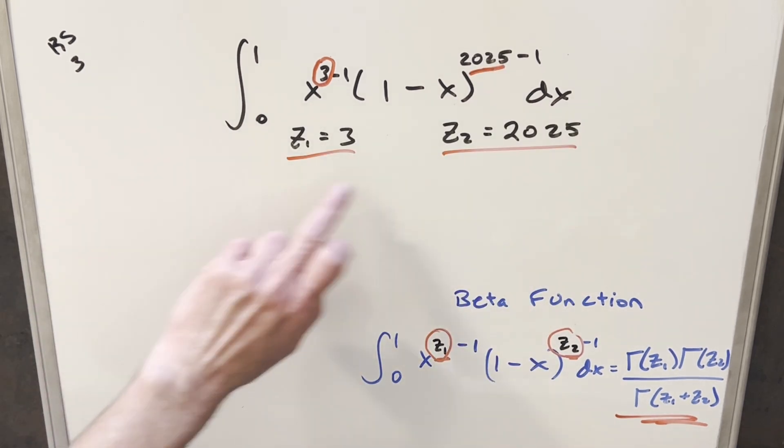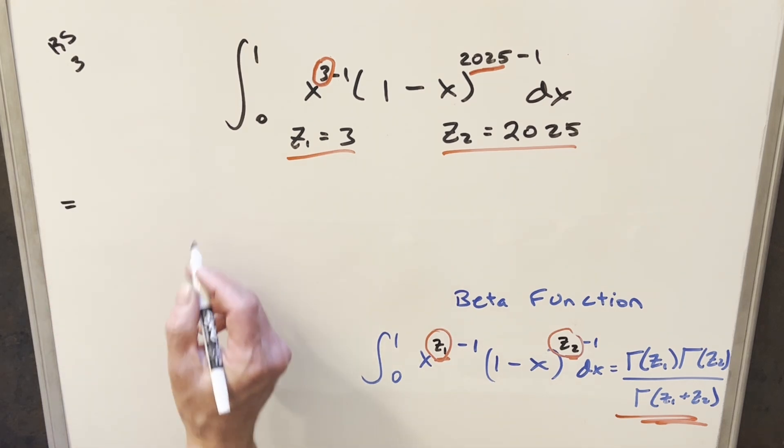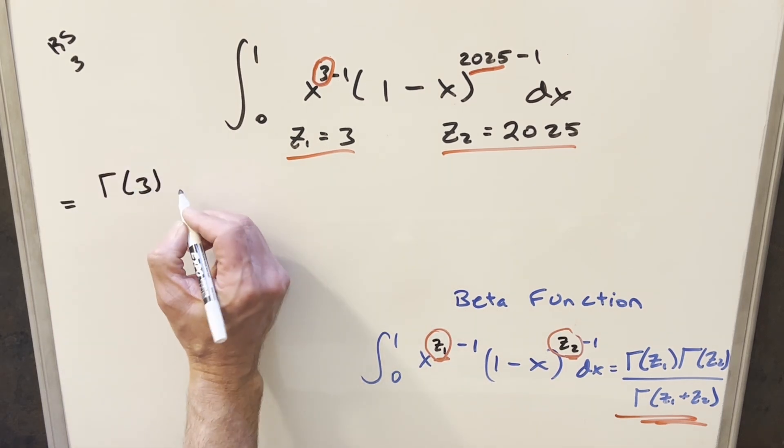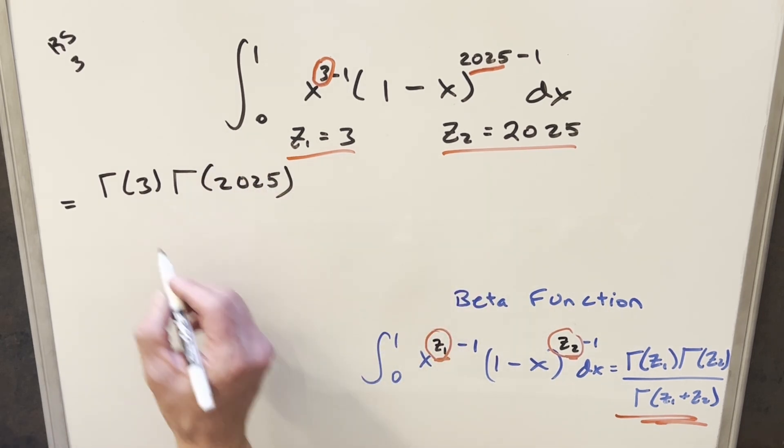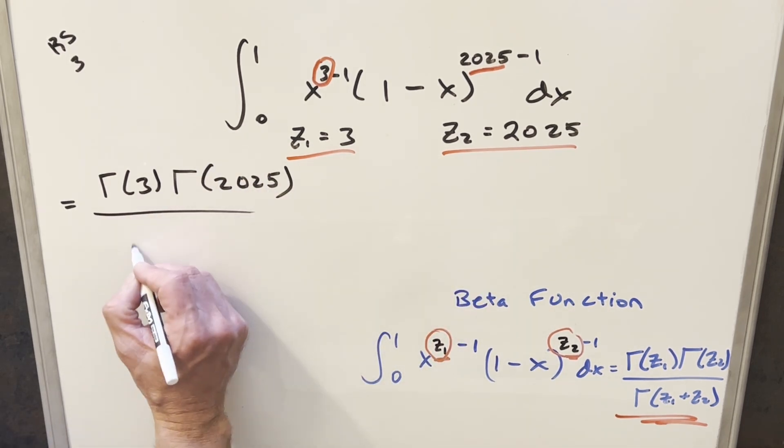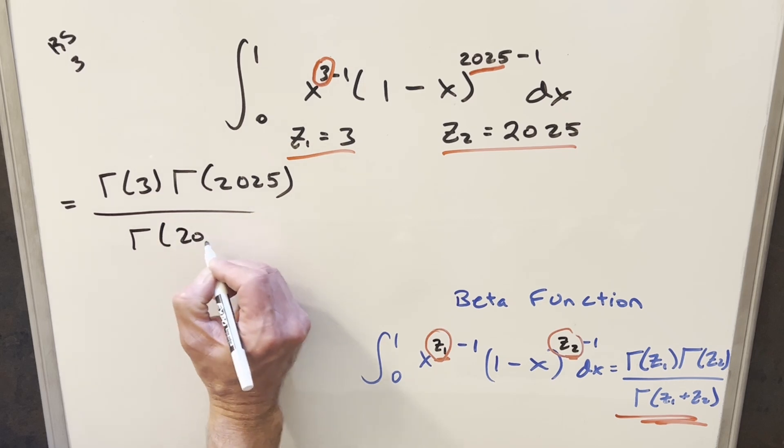Then all we need to do from here is take this z1 and z2 value and plug it into this formula over here in terms of the gamma function. So we're just going to have gamma of z1, which is three, times gamma of this, which is 2025. And this is going to be all over gamma of the sum of these two. So this is going to be 2028.